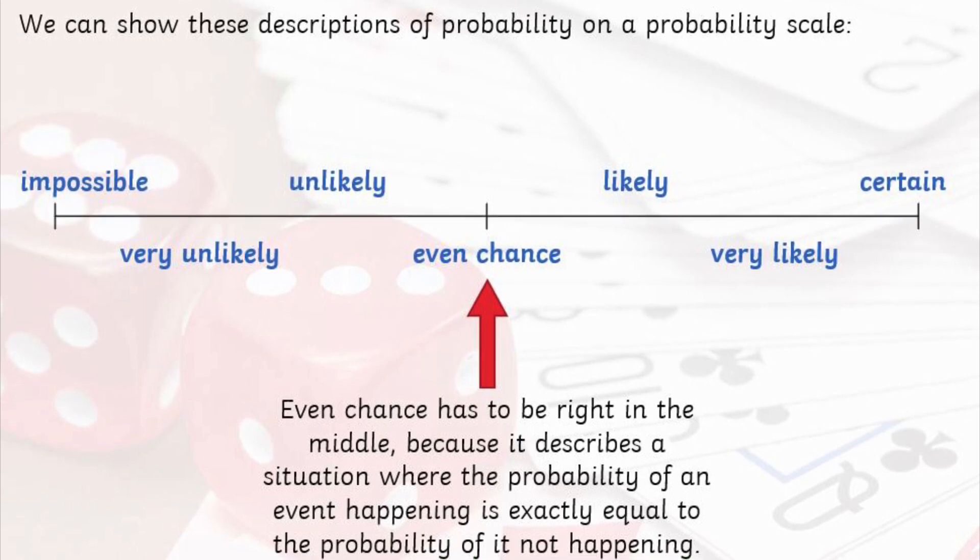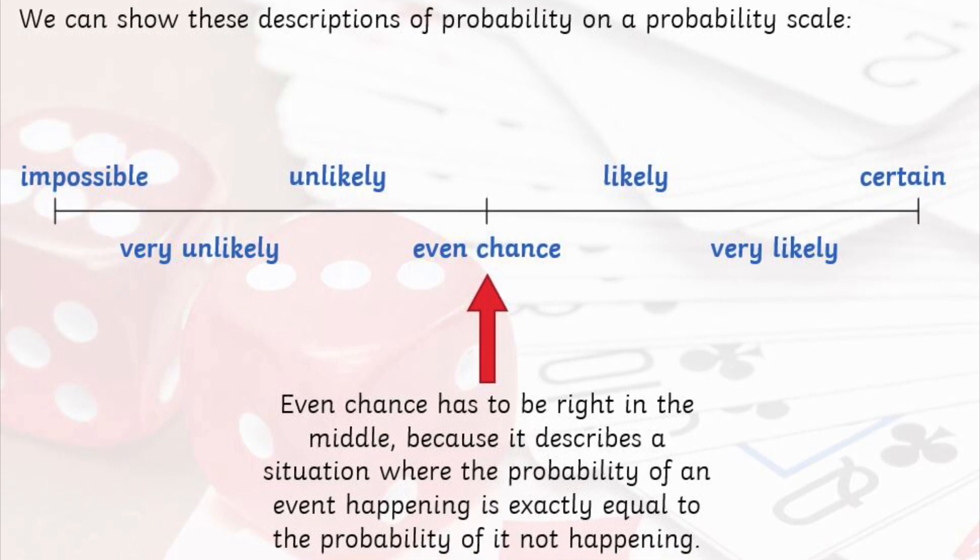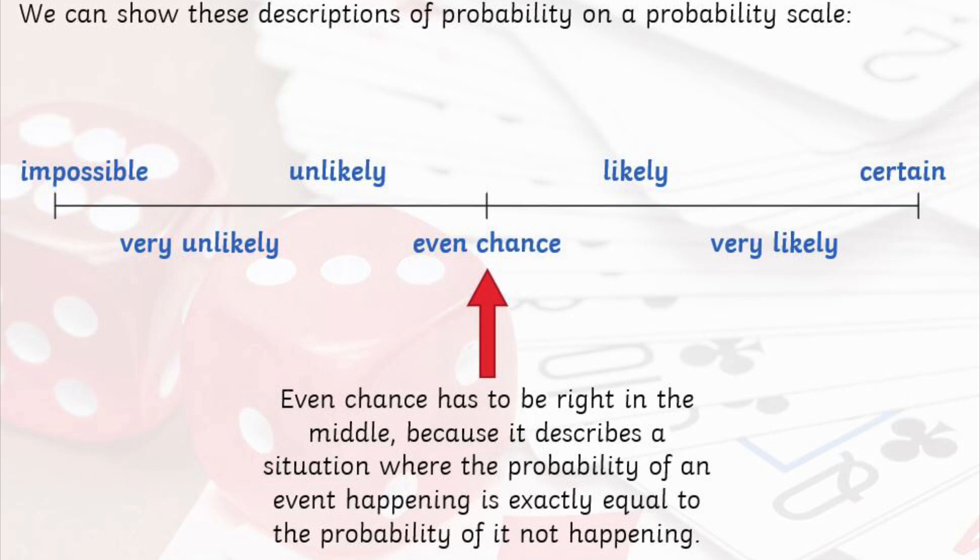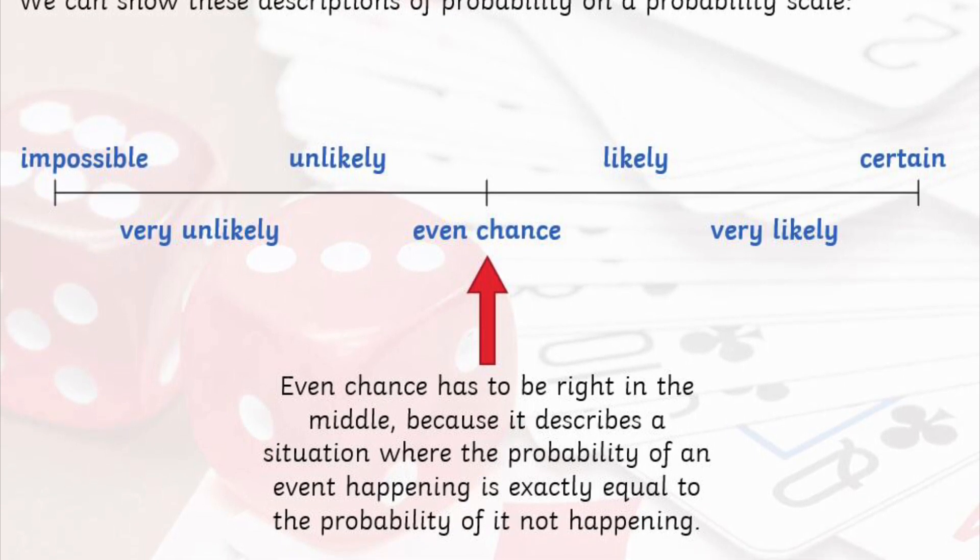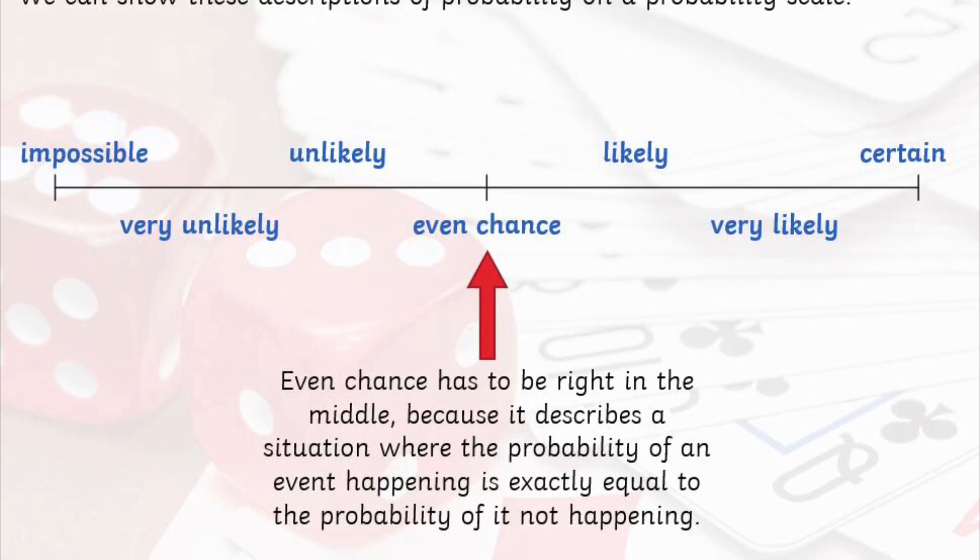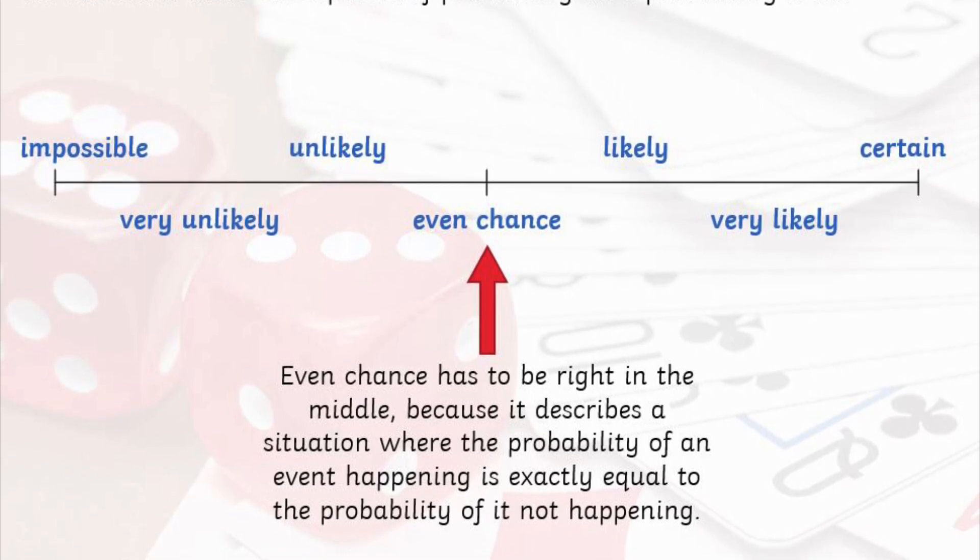Now take note of the words even chance. This might be a new phrase that you're unaware of, which simply means the chances of it happening or not happening are exactly the same. That's why it's positioned right in the middle of the scale.